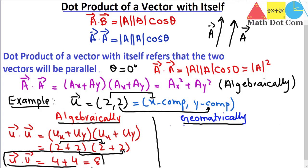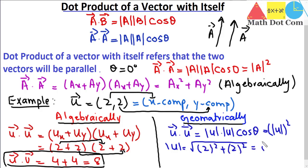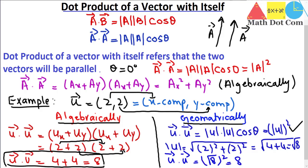Now let's find the dot product geometrically. We use u dot u equals the magnitude of u times the magnitude of u times cosine theta, and since theta equals zero for parallel vectors, this simplifies to the magnitude of u squared. The magnitude of u is the square root of 2 squared plus 2 squared, which equals the square root of 8. So u dot u equals the square root of 8 squared, which equals 8 — the same answer as the algebraic method.